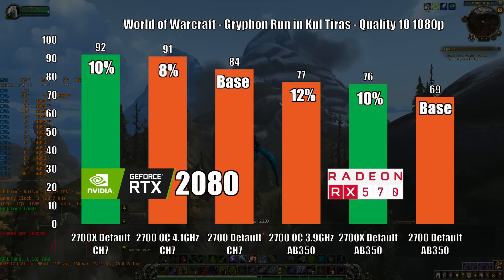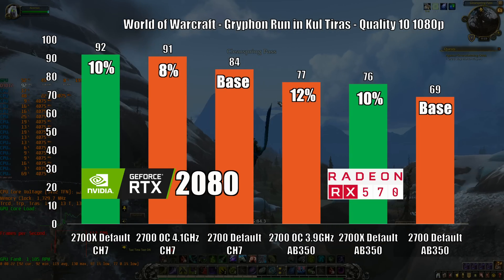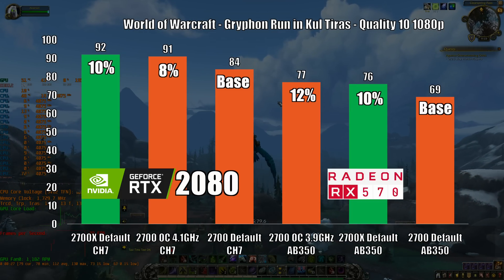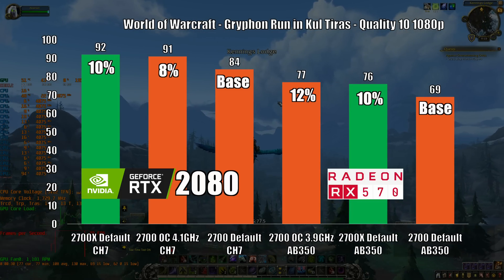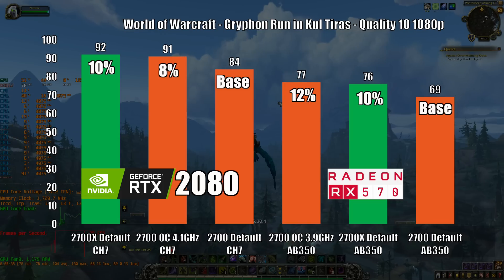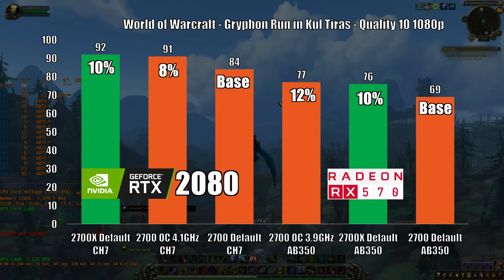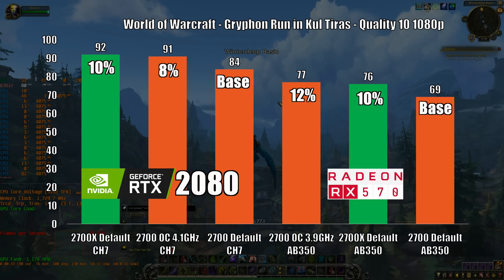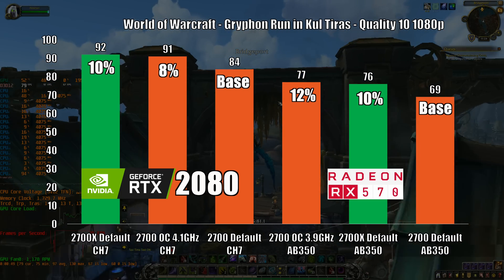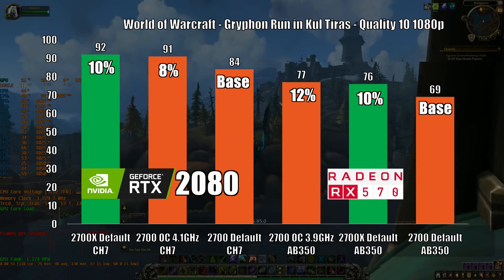World of Warcraft doesn't need much explanation. We all know that it's very demanding in terms of IPC — instructions per clock. Since it's still mainly single-core bound, using a GPU that costs five times more doesn't bring much more FPS. This is actually one of the hardest games for a CPU to run properly. With the new Ryzen we should see a big improvement here. If you are considering a Zen or Zen+ to play World of Warcraft, just wait — as soon as I can, I will cover all the new Ryzen with World of Warcraft, not only with a gryphon run but also in dungeons and raids.